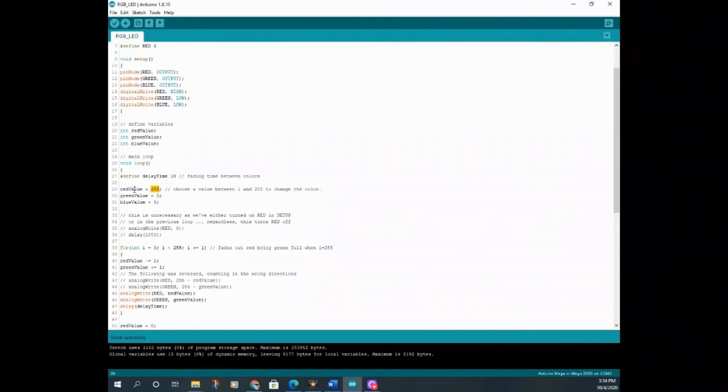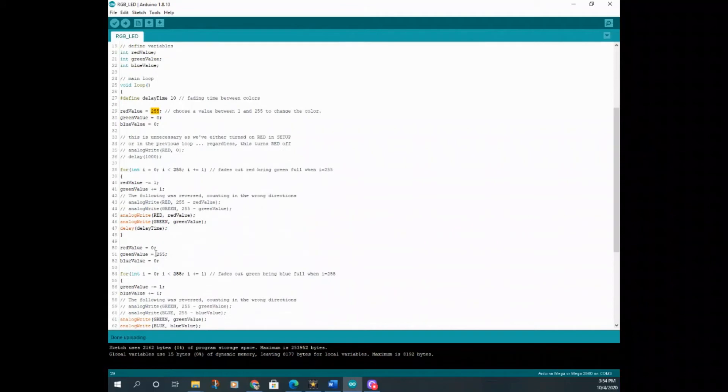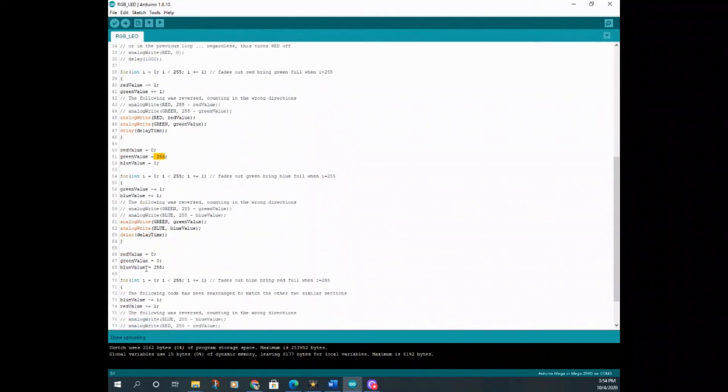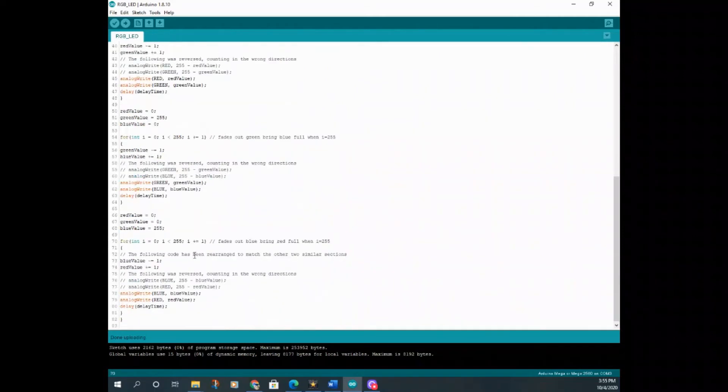So here in this section, we have red is receiving maximum brightness. In this section, we see green is receiving maximum brightness. In this section, we see blue is receiving maximum brightness. The function then calls analogWrite to set the brightness of each LED. Once we have this set up, we will go up here and upload this to our board. And once upload is done, take a look at your board.